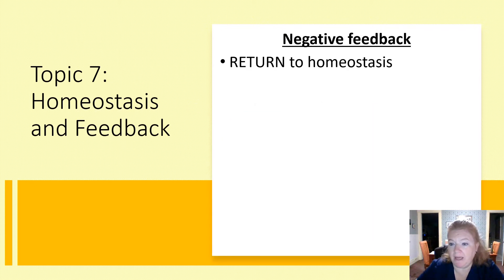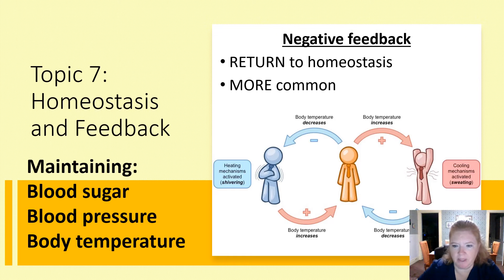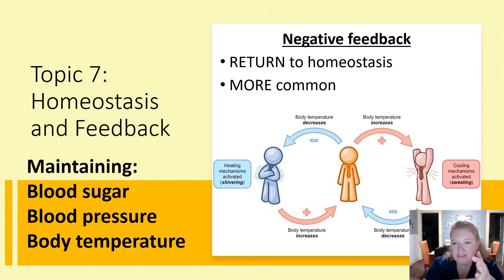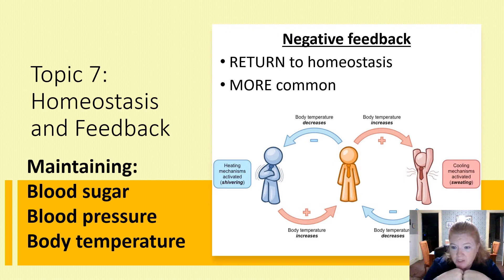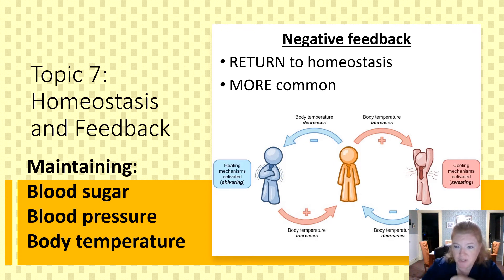Negative feedback is a return to homeostasis and it's much more common. Examples include maintaining blood sugar, regulating blood pressure, monitoring body temperature, and controlling blood pH.